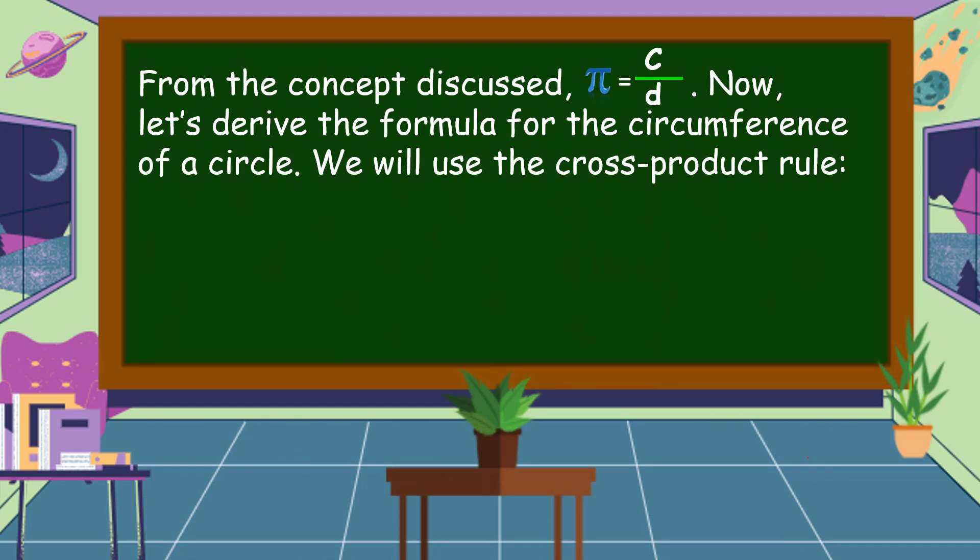From the concepts discussed, pi is equal to circumference divided by diameter. Now, let's derive the formula for the circumference of a circle. We will use the cross-product rule.